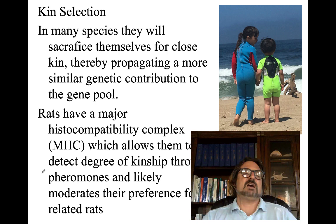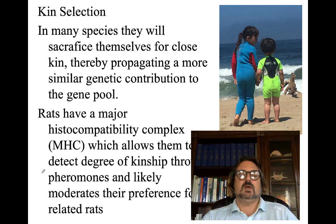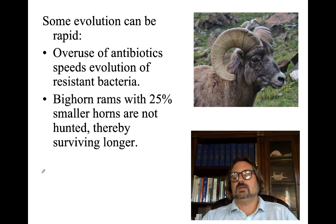Kin selection is the idea that in many species, individuals will sacrifice themselves for close kin, thereby propagating a more similar genetic contribution to the gene pool. Rats have a major histocompatibility complex that allows them to detect degree of kinship through pheromones, but human beings don't have this. In humans, other mechanisms are used to detect kinship, but we still seem to have a preference for kin — we like to see them succeed.